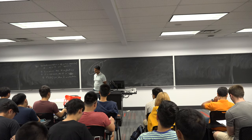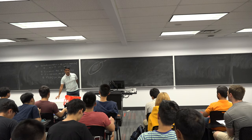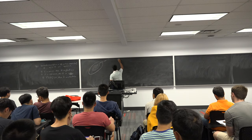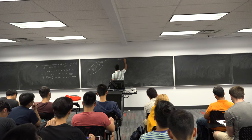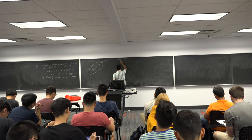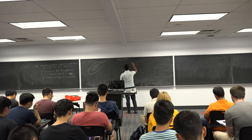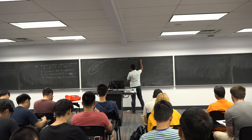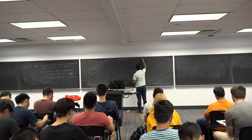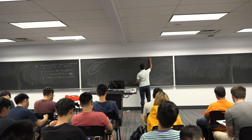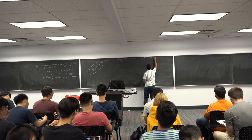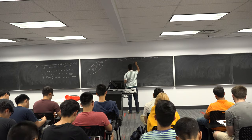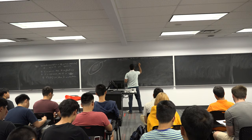Now let's talk about Newton's method and the convergence property of Newton's method. So let x_k converge to x_star where the gradient of f at x_star equals 0, and the second derivative of f at x_star is strictly positive definite.